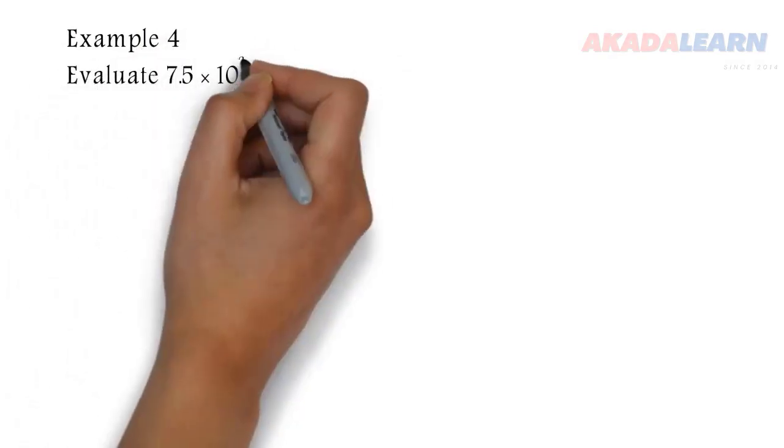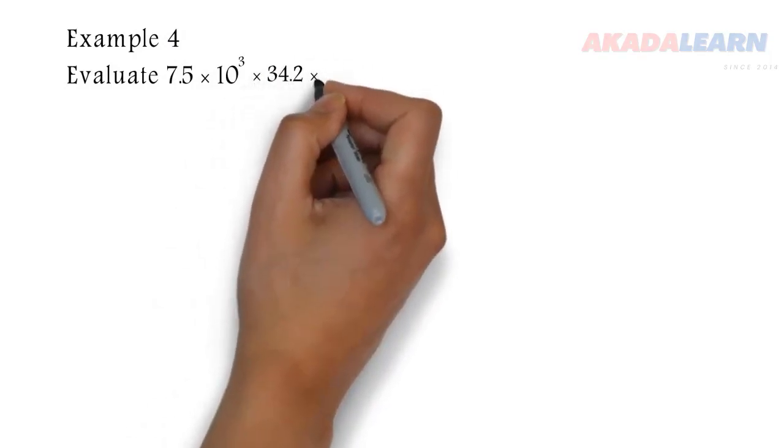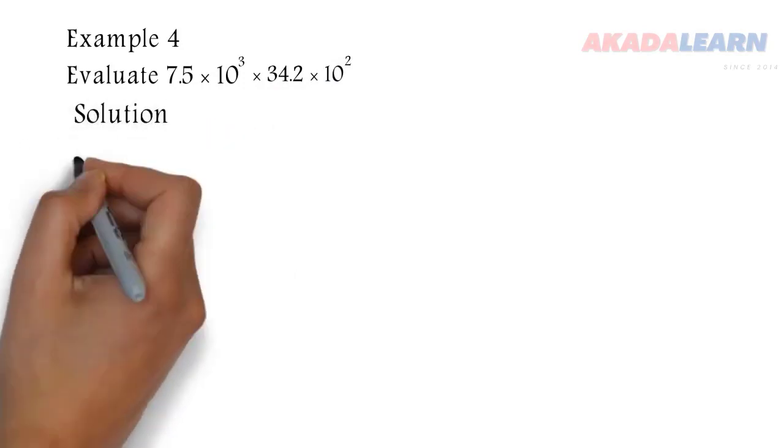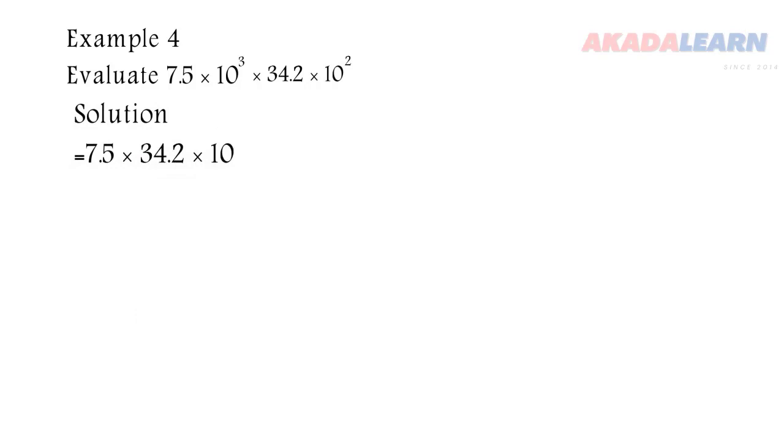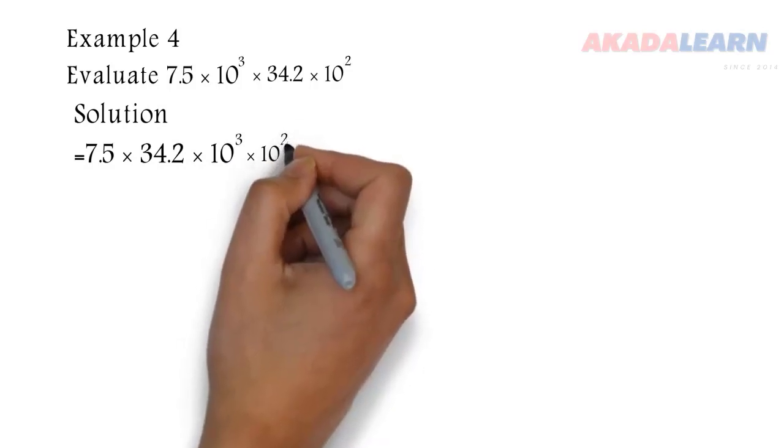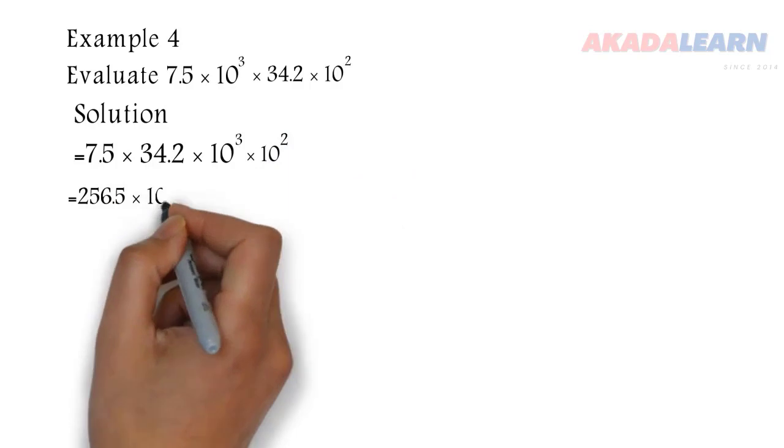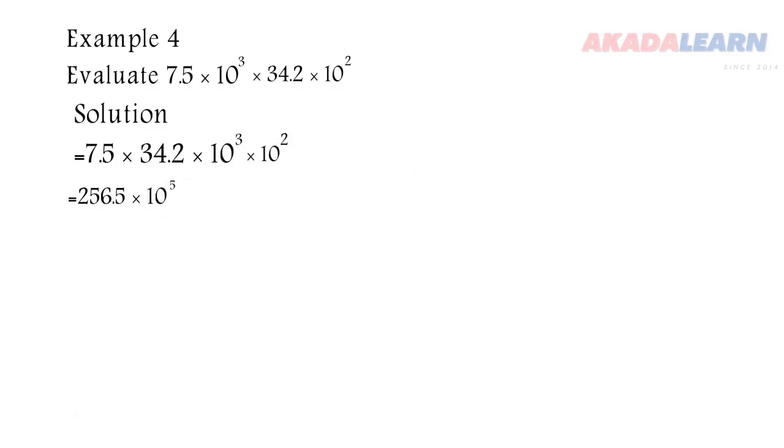Let's see another example. Evaluate 7.5 × 10^3 × 34.2 × 10^2. How we're going to do that: we multiply the whole part first, which is 7.5 × 34.2, then we also multiply the index form, 10^3 × 10^2. If we multiply the first two numbers, we get 256.5. Now 10^3 × 10^2 is 10^5.